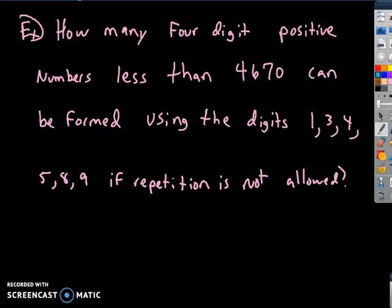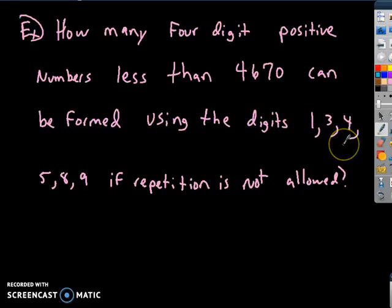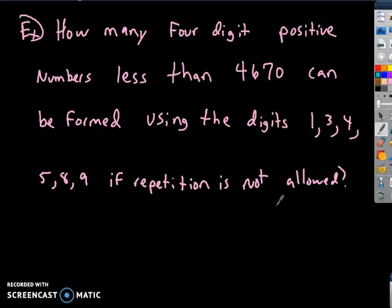Here's a new question: how many four-digit positive numbers less than 4,670 can be formed using the digits 1, 3, 4, 5, 8, and 9, if repetition is not allowed? So no digit can appear more than once.